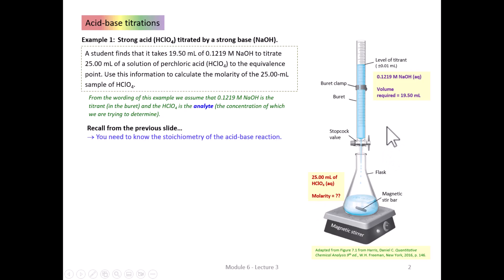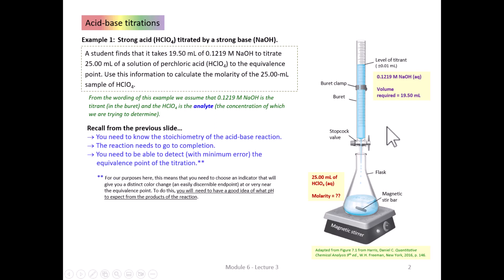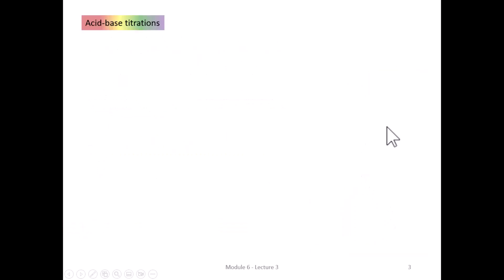Recall that we need to know the stoichiometry of this acid-base reaction, be confident the reaction went to completion, and be able to detect the equivalence point with minimum error. So we need to choose an indicator that gives a distinct color change — an easily discernible endpoint at or very near the equivalence point. To do this, we need to have a good idea of what pH to expect when the reaction is complete.